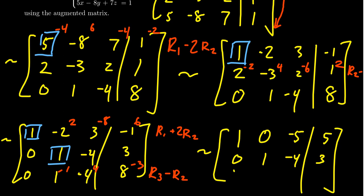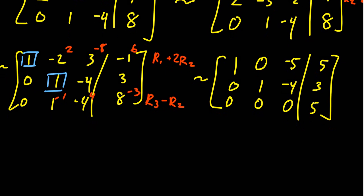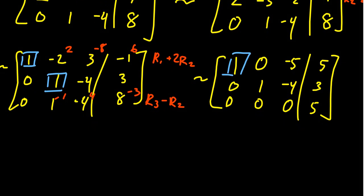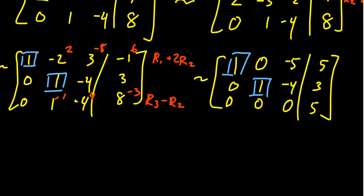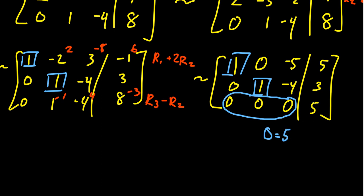As we combine these together, we notice something: for the third row, 0 in the first position, then 1 minus 1 equals 0, and then negative 4 plus 4 equals 0 — which we were not expecting. So we get a row of zeros on the left-hand side, and then 8 minus 3 equals 5 on the right-hand side. Analyzing this matrix, the pivot positions are in the first and second columns; there is no pivot in the third column. Looking at the coefficient matrix, the bottom row is all zeros — giving us the equation 0 equals 5, which is a contradiction. 0 does not equal 5.